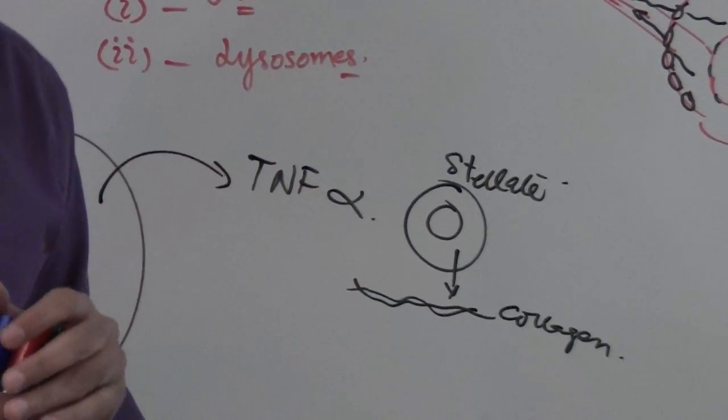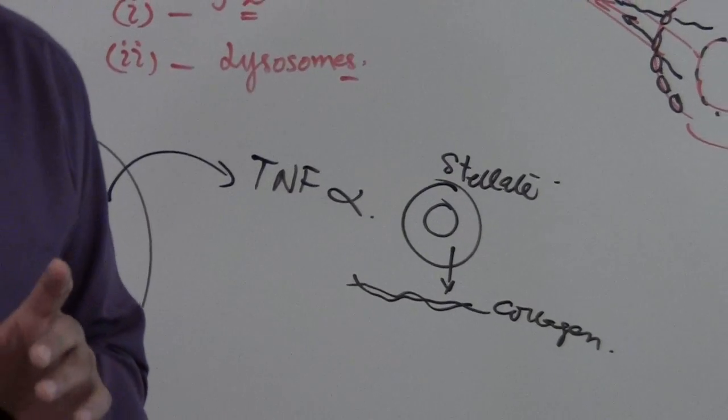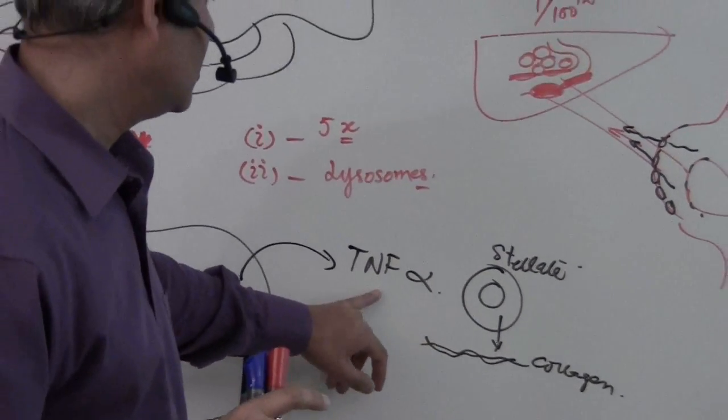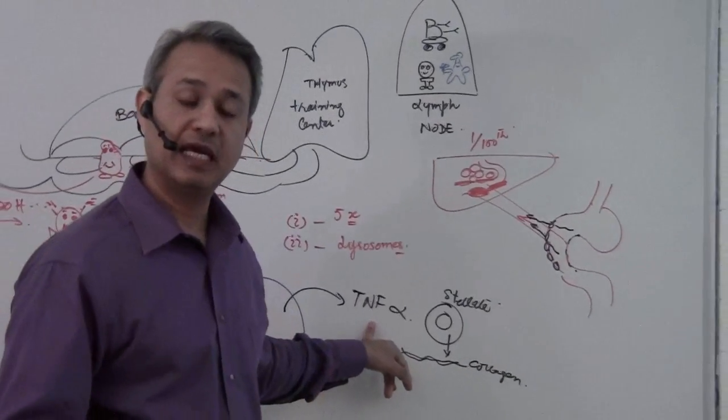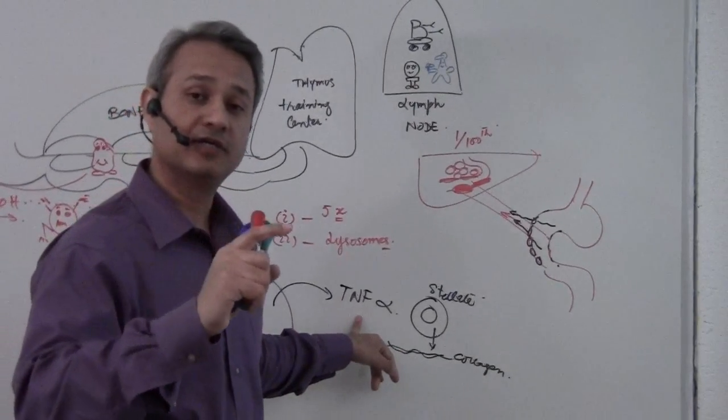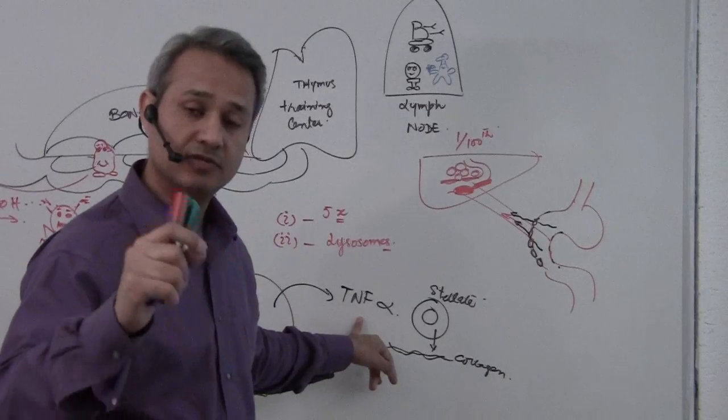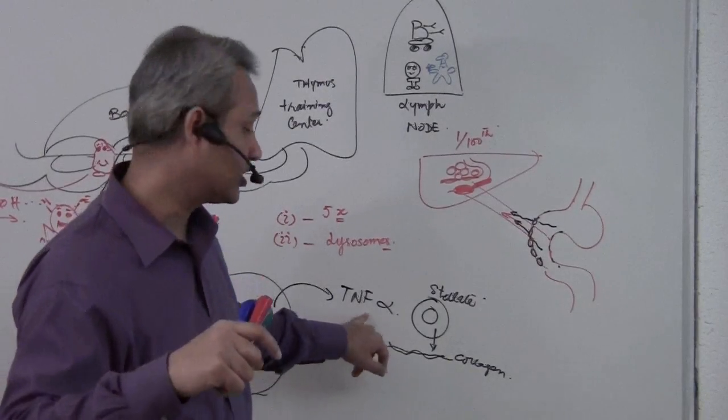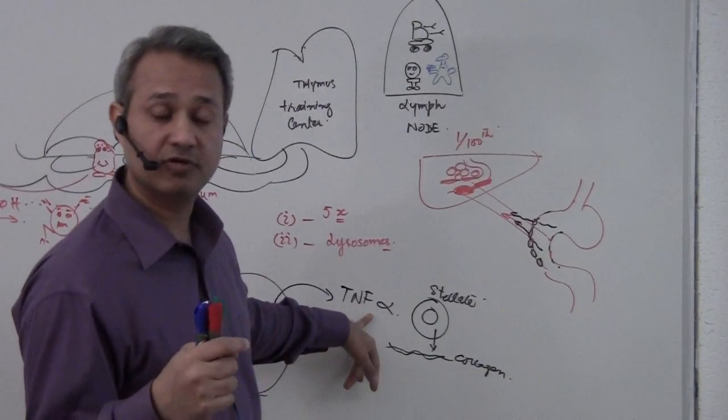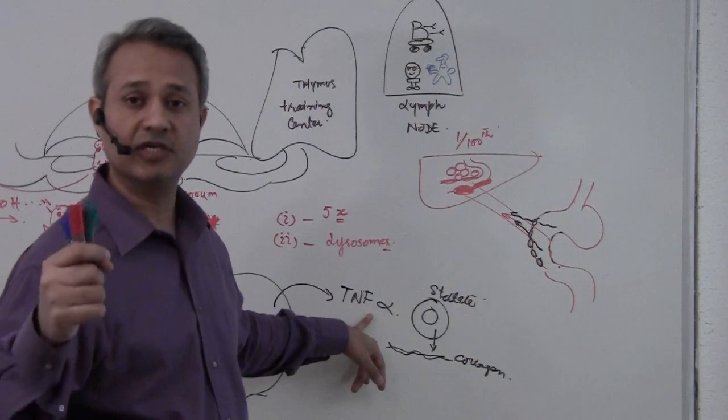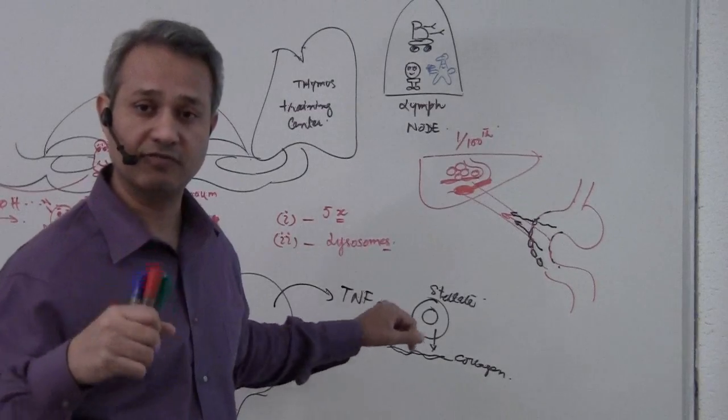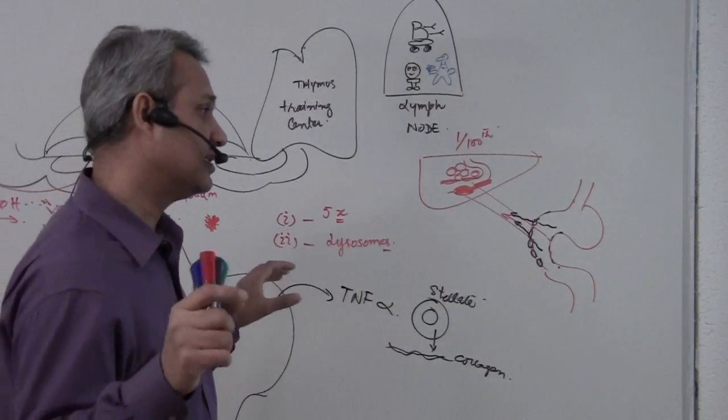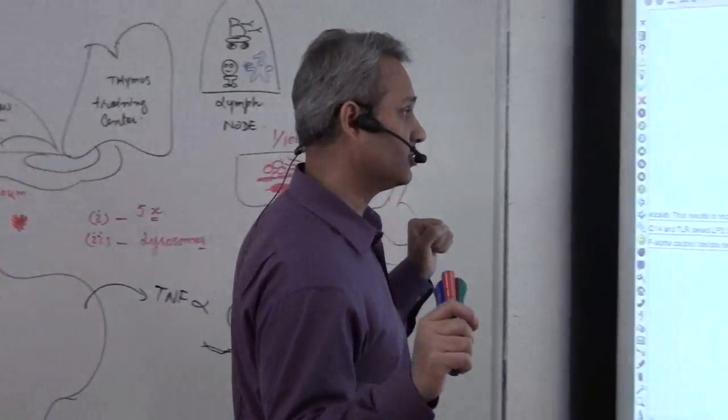What is the research? They are trying to knock out the tumor necrosis factor alpha receptors in alcoholic animals. They give them alcohol and knock out these receptors. They are saying that the cirrhotic liver disease is going down. That is just research, but this is important to understand.